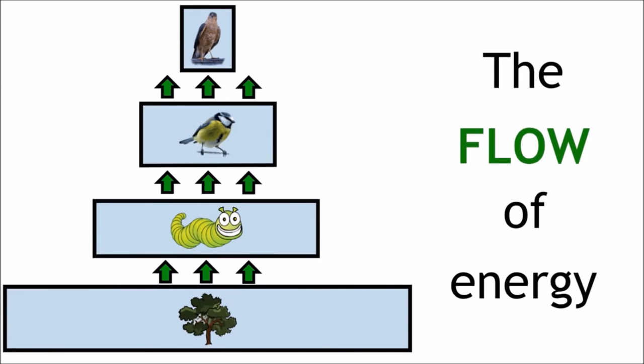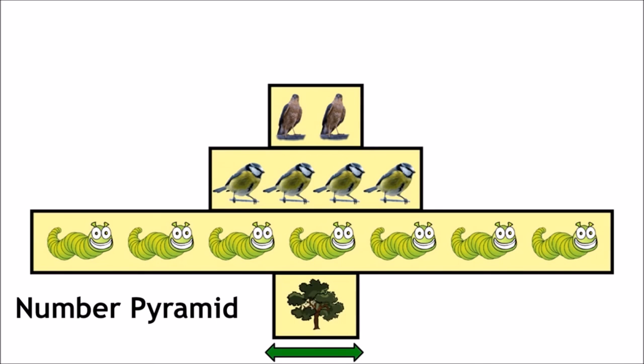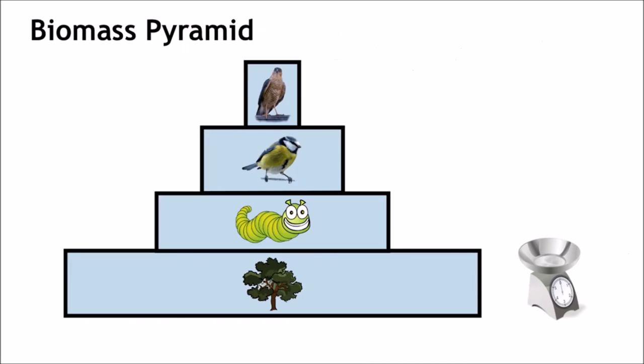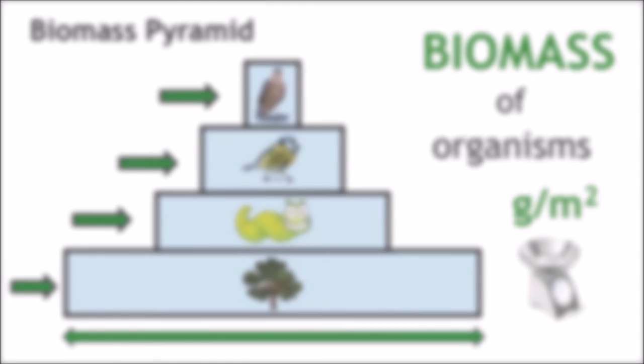The width of the bar in number pyramids represents the number of organisms in that trophic level. The width of the bar in biomass pyramids represents the biomass of the organisms in that trophic level.